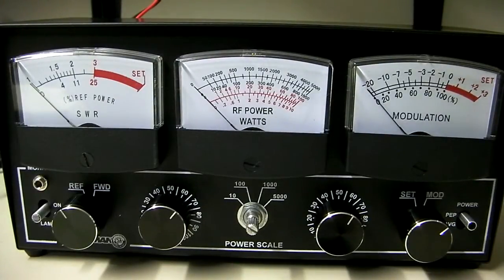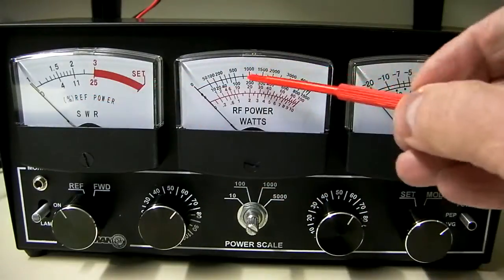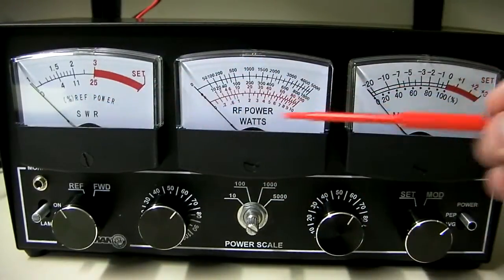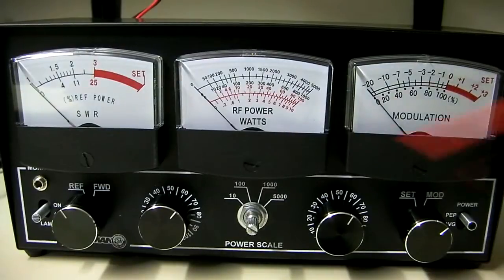This is a meter by Workman, supposed to be rated for up to 5,000 watts for measurements. It's got three windows here: SWR, wattage, and modulation. They all work at the same time, so you can see all three simultaneously, which is nice.